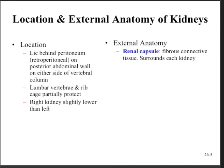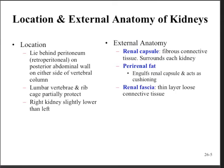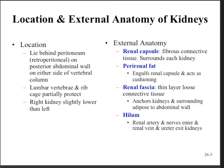They're surrounded externally by a capsule, which is fibrous connective tissue around each kidney. There's also a fat pad that protects each of the organs, which basically encircles the renal capsule and cushions it. There's also fascia, which is a thin layer of loose connective tissue that serves to anchor the kidney to the surrounding tissues that support it. The hilum is the little indentation on the medial side of each kidney where the renal artery, veins, and nerves enter and leave, opening into the renal sinus, which is a cavity filled with fat and loose connective tissue.